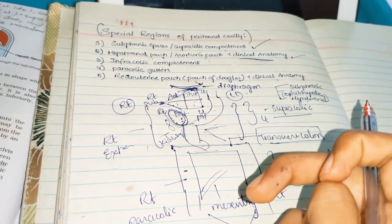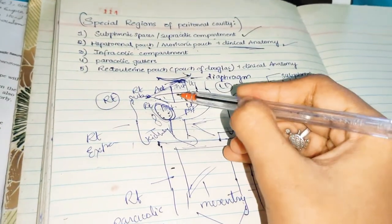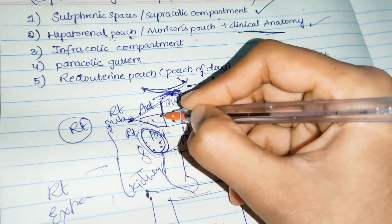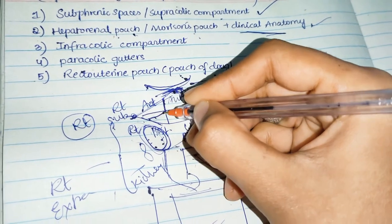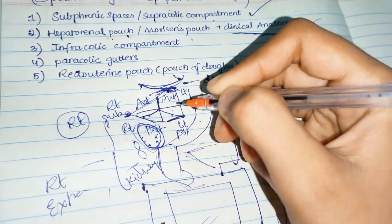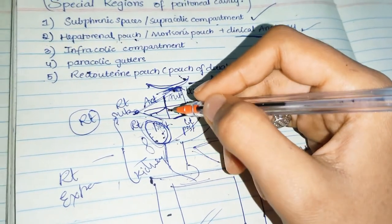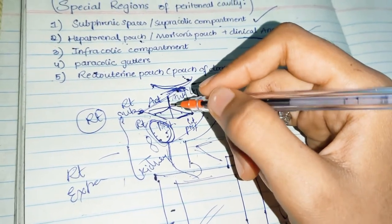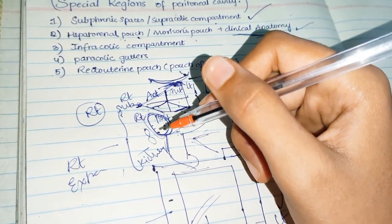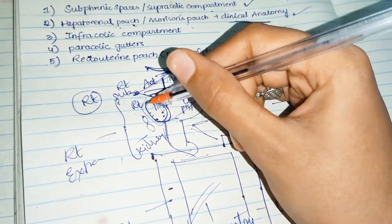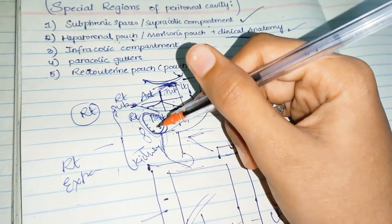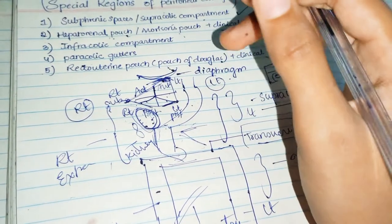Superiorly, the hepatorenal pouch is bounded by the inferior layer of the coronary ligament. If you remember from the liver, the falciform ligament divides into the right triangular ligament, left triangular ligament, and the coronary ligament. So superiorly you have the inferior layer of the coronary ligament. Inferiorly, it opens into the general peritoneal cavity.